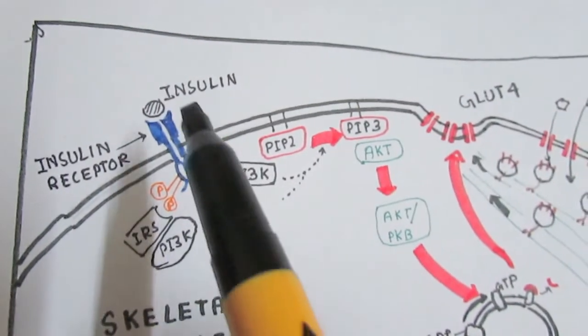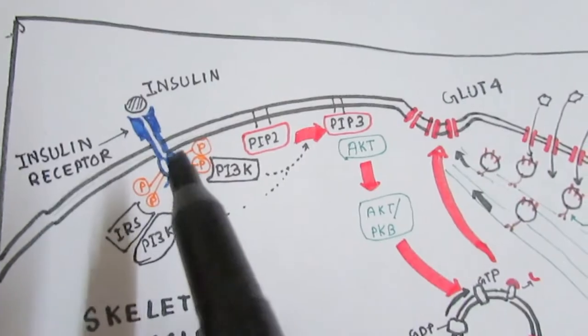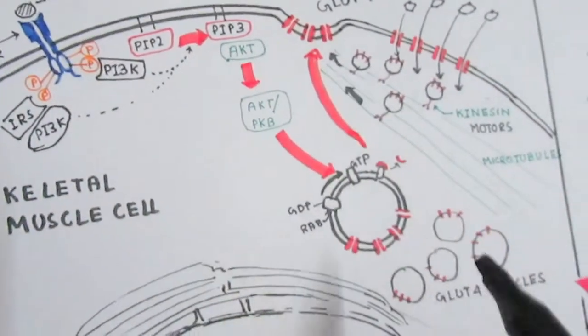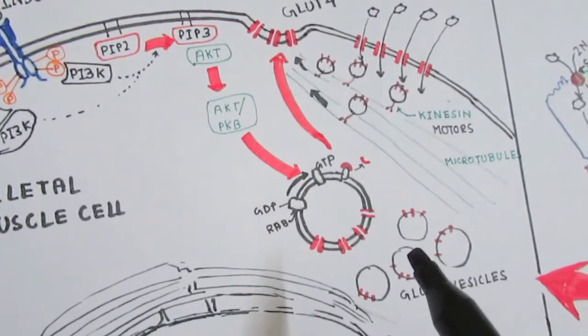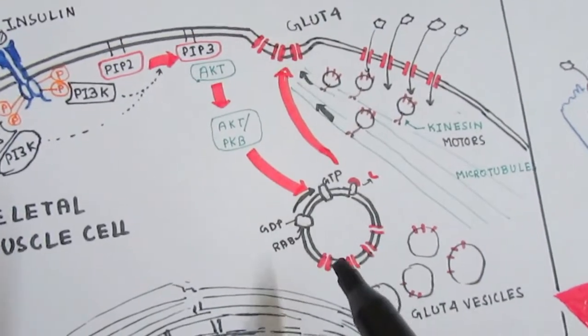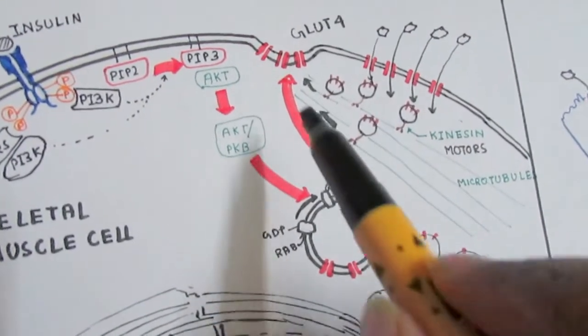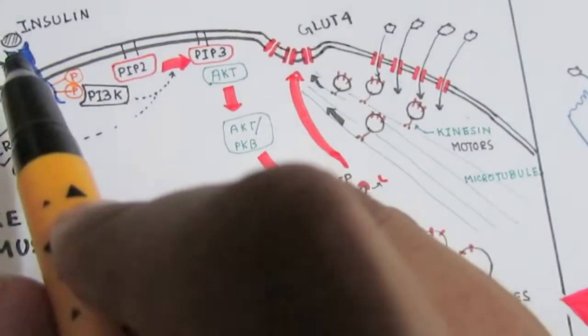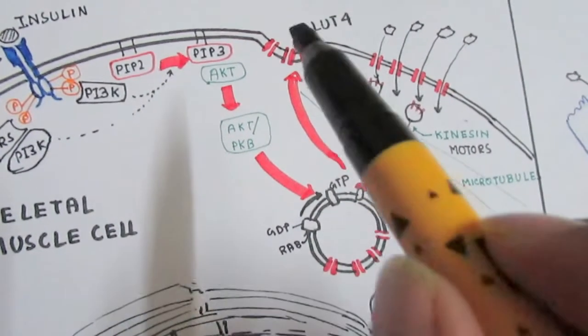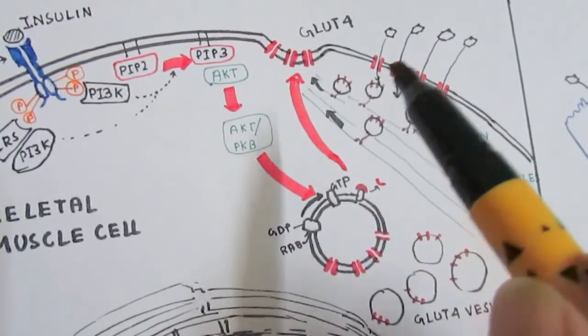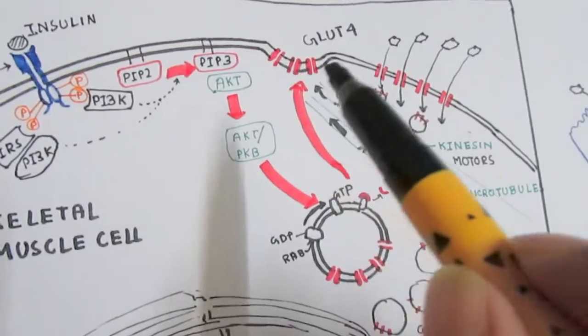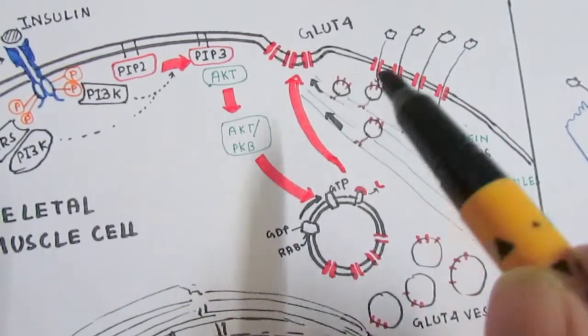The insulin will trigger signaling inside the cell so that preformed vesicles containing GLUT4—the glucose transporter—can dock. Insulin binding ultimately triggers GLUT4 vesicle docking to the membrane. Once more GLUT4 vesicles dock to the membrane, the number of GLUT4 on the cell surface increases.